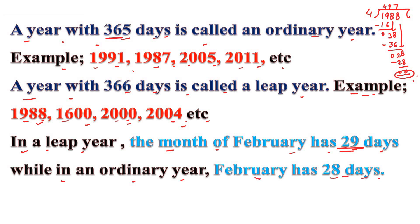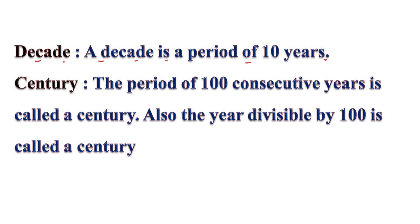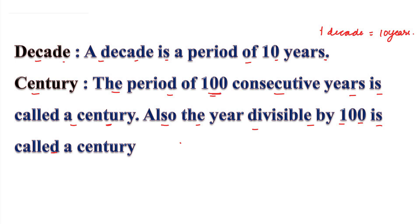A decade is a period of 10 years — 1 decade equals 10 years. A century is the period of 100 consecutive years. The year divisible by 100 is also called a century. So 1 century is equal to 100 years.